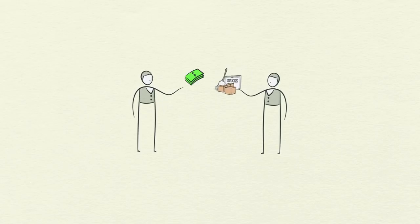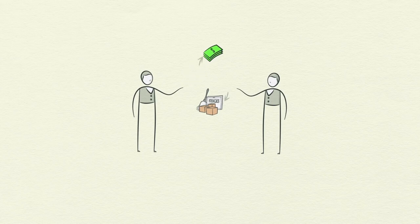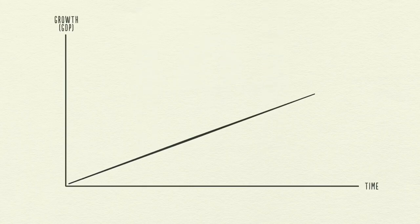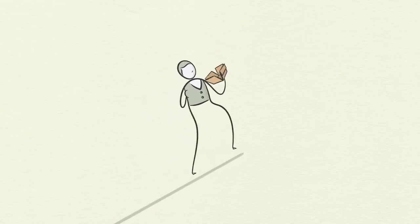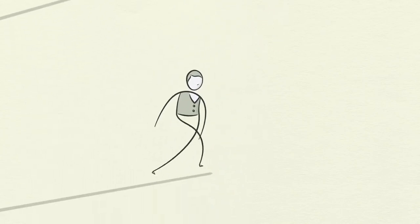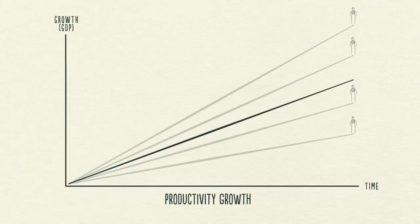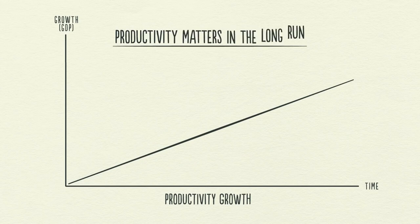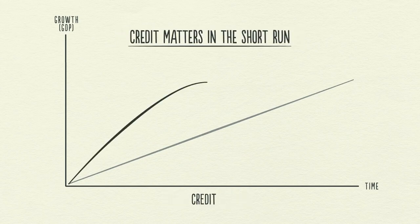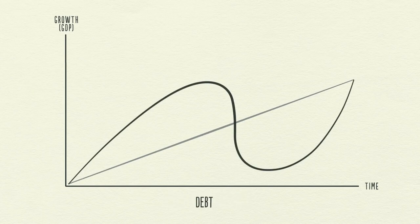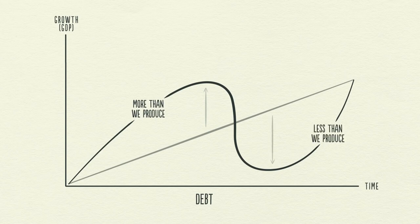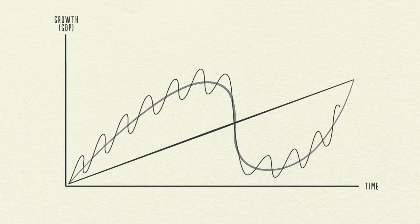In a transaction, you have to give something in order to get something, and how much you get depends on how much you produce. Over time we learn, and that accumulated knowledge raises our living standards — we call this productivity growth. Productivity matters most in the long run, but credit matters most in the short run, because productivity growth doesn't fluctuate much and so it's not a big driver of economic swings. Debt is, because it allows us to consume more than we produce when we acquire it, and forces us to consume less than we produce when we have to pay it back.